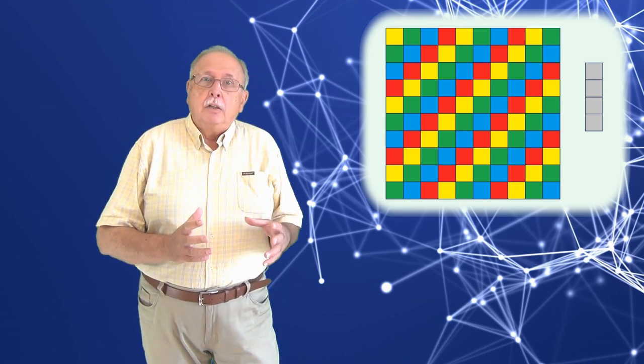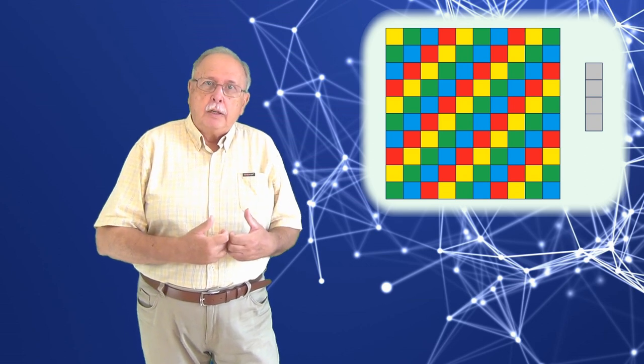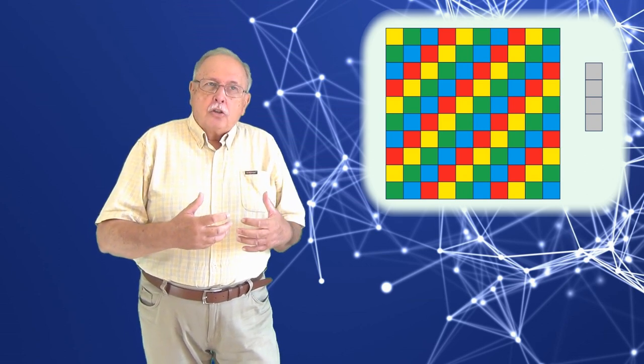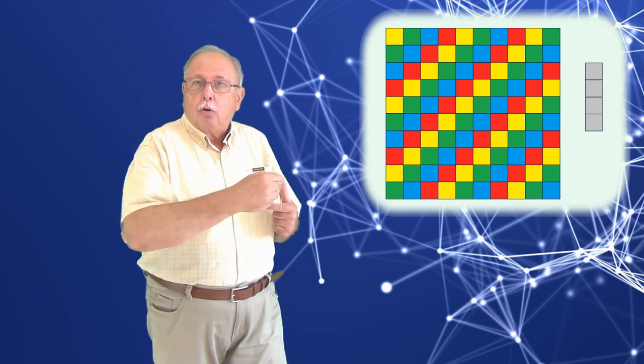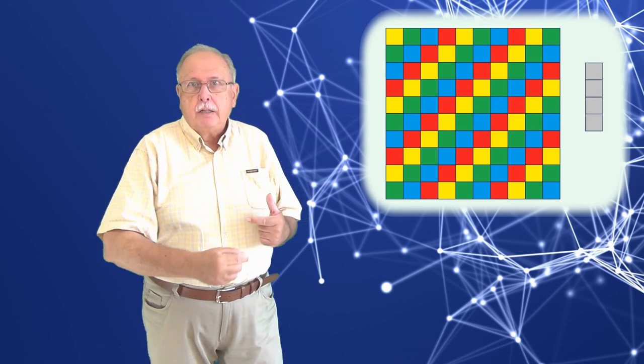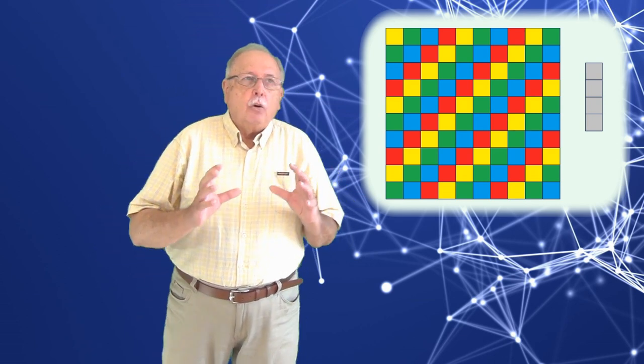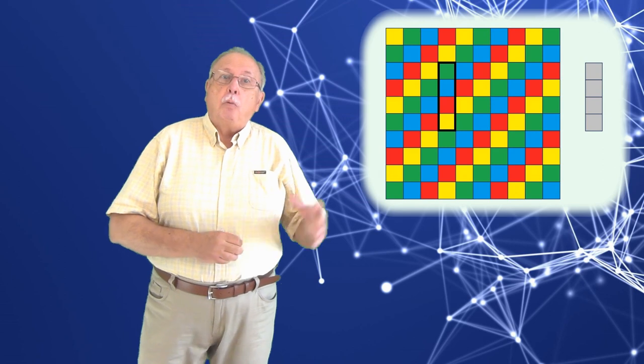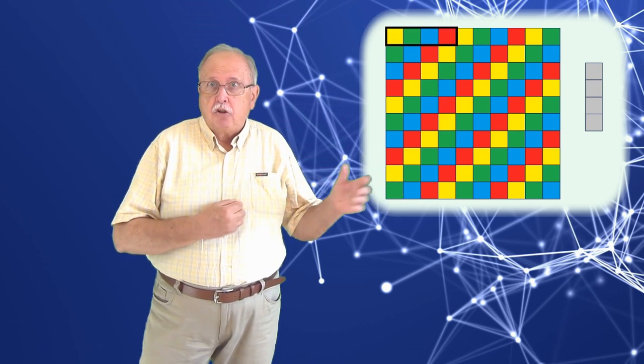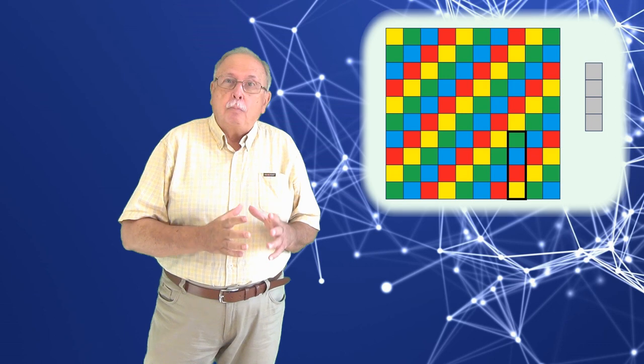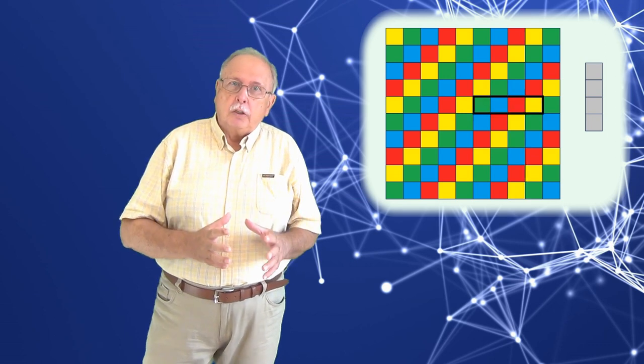În acest fel, obținem o succesiune de culori în care cele patru culori se repetă identic, atât pe orizontală, cât și pe verticală. Și acum vă rog să observați că oriunde punem o placă de 4 pe 1, cum sunt plăcile noastre, ea acoperă patru culori.